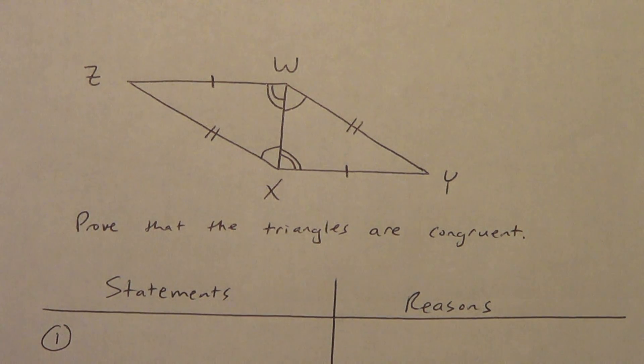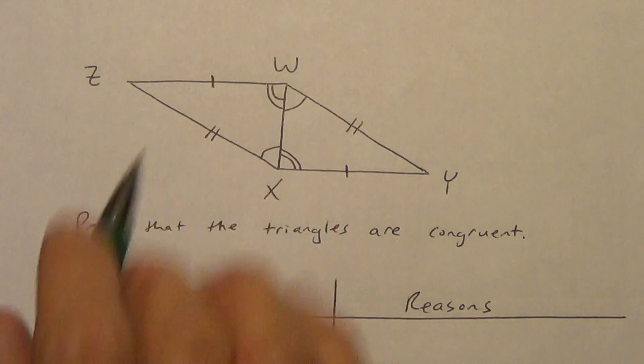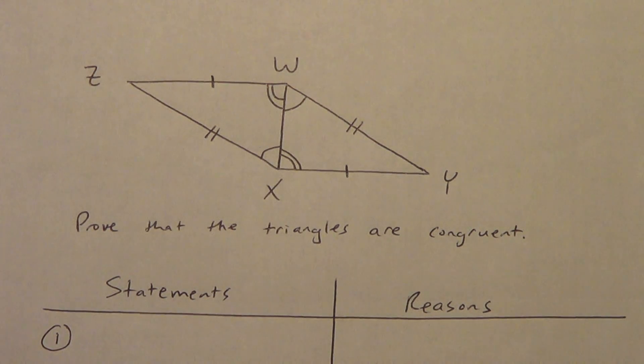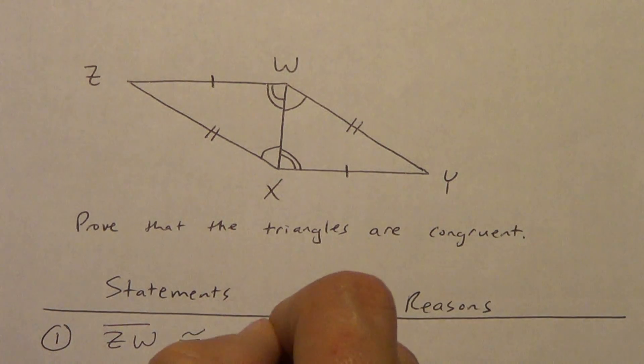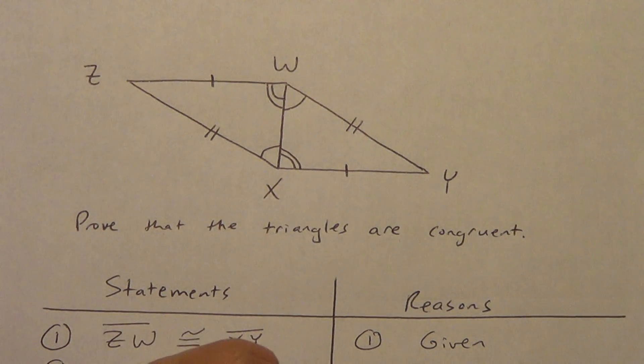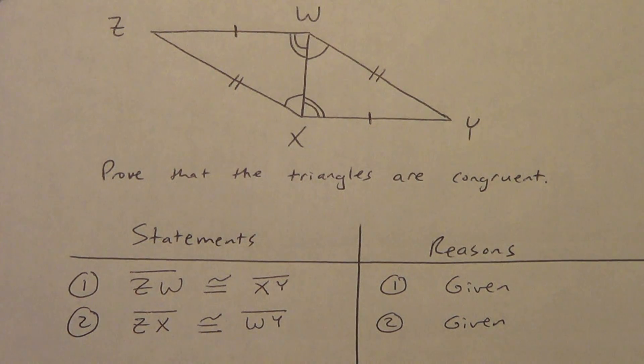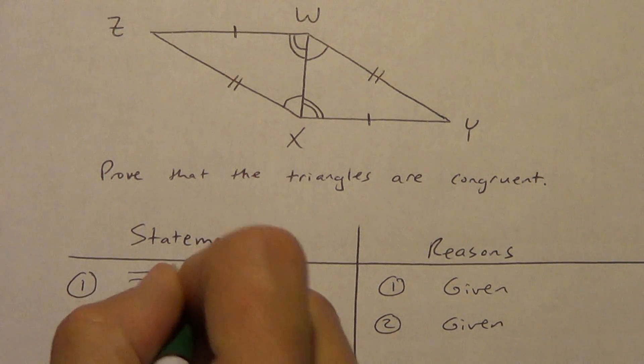So number one. We actually have a lot of givens on this one. All these marks are givens. So we're going to start with this. I'm just going to start with the side. So ZW is congruent to XY. And that's a given. And ZX is congruent to WY. And that's also a given. Now, some people might put all four of these things in the very first line and just write given for all of them. I like to separate them out. You'll learn more about why I like to separate them out as we move into some later lessons.